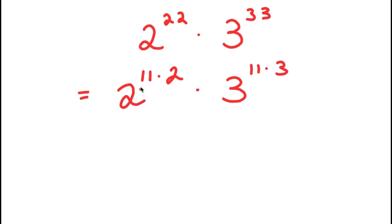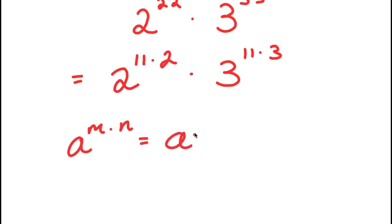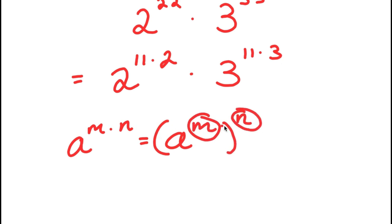So this is equal to 2 to the power of 11 times 2, times 3 to the power of 11 times 3. From here, there is an important property of exponents I'm going to use: if I have something in the form a to the power of m times n, this is equal to a to the power of m to the power of n — these two exponents simply multiply.